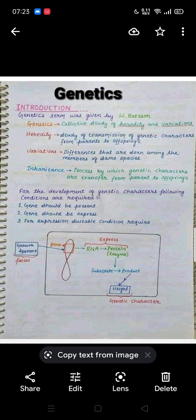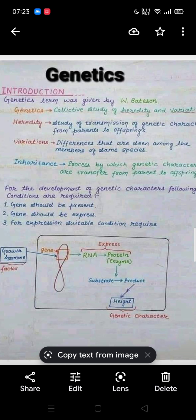In order to develop genetic characters, the following conditions are required: number one, a gene should be present; number two, the gene should be expressed; and number three, a suitable condition is required for expression. So for the transfer of genetic characters, there must be presence of a gene, its expression is required, and expression occurs under suitable conditions.